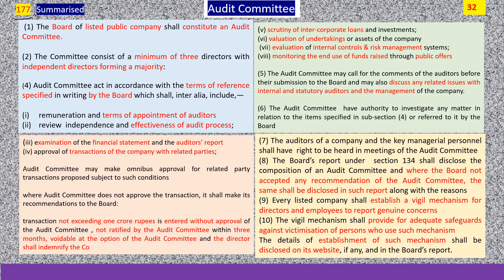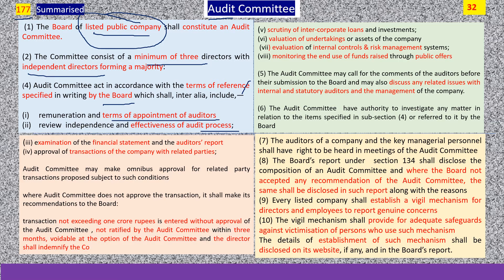Section 177 talks of appointment of an audit committee by every listed company. The audit committee shall have a minimum of three directors, and majority of directors in the audit committee shall be independent directors. The terms of reference to the audit committee will be furnished by the board. Normally the scope covers terms of appointment of auditors, effectiveness of audit process, scrutiny of inter-corporate loans, valuation of undertaking or assets of the company, and internal control and risk management.